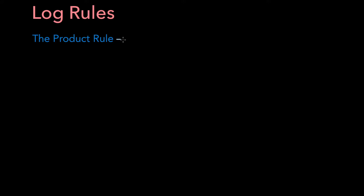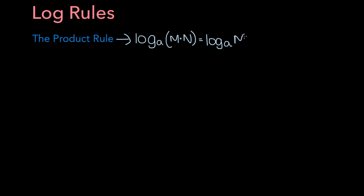Now let's cover some of the main log rules. The first is the product rule. The product rule of logarithms states that if you have the log base a of m times n, this is equal to the log base a of m plus the log base a of n.